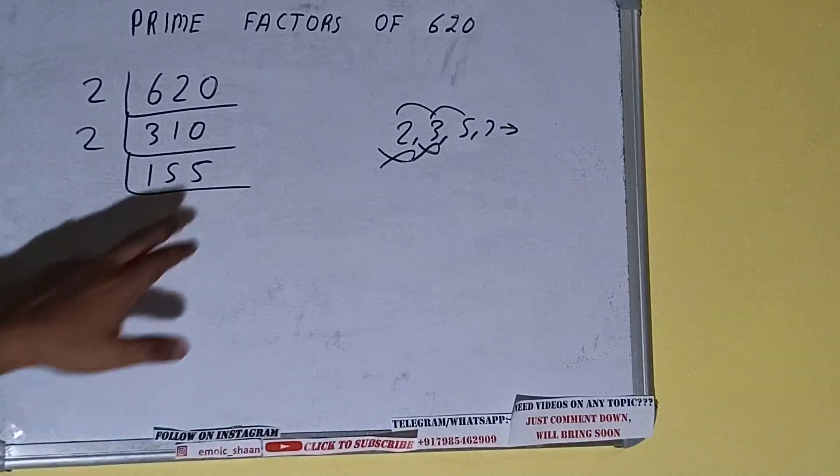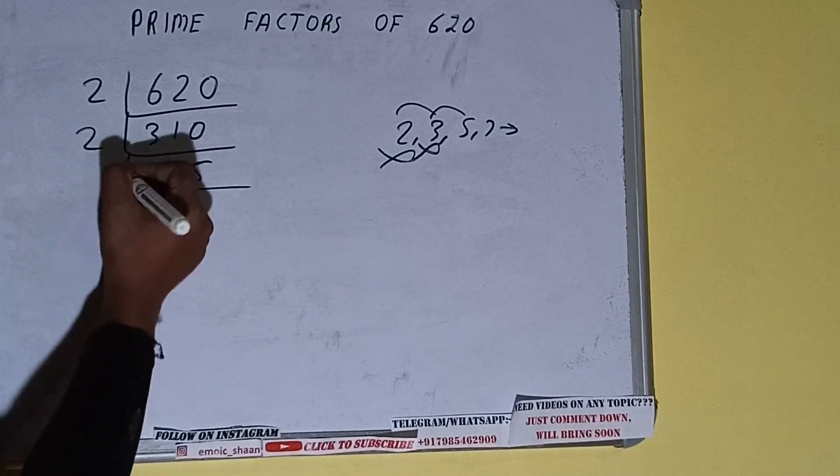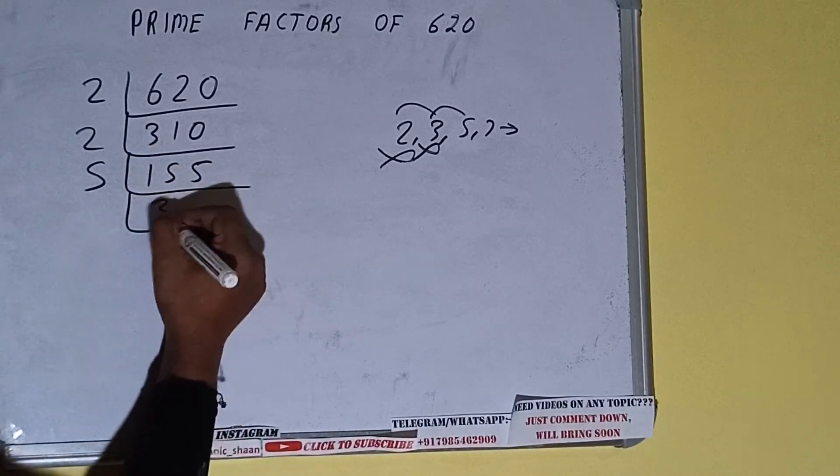Let's check with 5. The last digit is 5, so it is divisible by 5. So divide it and we'll be having 31.